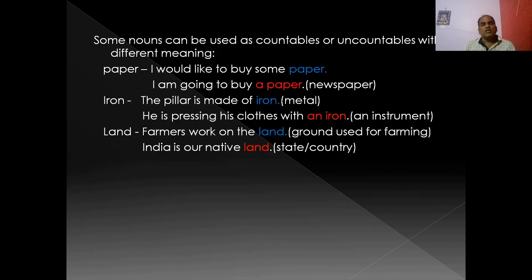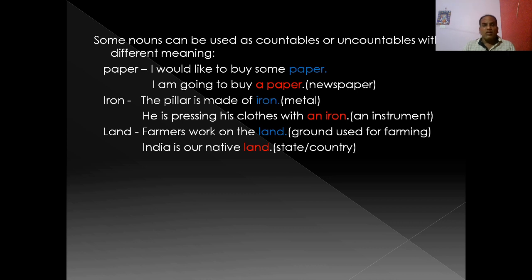Some nouns can be used as countables or uncountables with different meanings. For example: 'paper' — 'I would like to buy some paper' means the material paper; but 'I am going to buy a paper' means the newspaper. 'Iron' — 'the pillar is made of iron' means the metal; but 'he is pressing his clothes with an iron' means the instrument. 'Land' — 'farmers work on the land' means ground used for farming; but 'India is our native land' means a state or country.